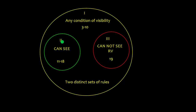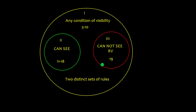Sections 2 and 3 are two distinct sets of rules. That means if rule 19 is applicable, rules 11 to 18 are not applicable, and vice versa.